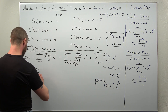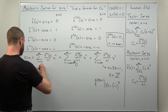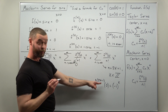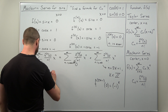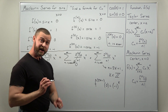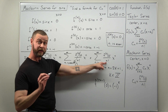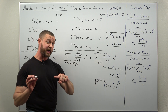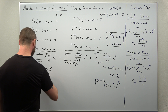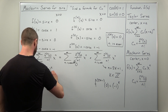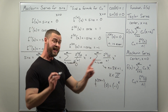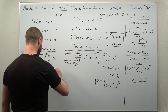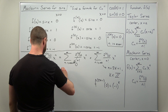Our sum now goes from k equals zero to infinity. The nth derivative evaluated at zero we write as negative one to the k power. In the denominator, n is an odd integer so we replace n factorial with 2k plus one factorial. Also notice the powers: x to the nth power now turns into x raised to the 2k plus one.